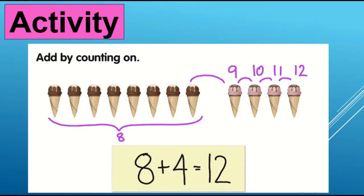8 plus, next count how many pink cones are here. Now you will count on what comes next to 8. Very good. 9, 10, 11, 12. So here are 4 pink cones. So 8 plus 4 equals 12.